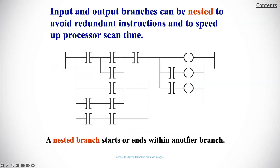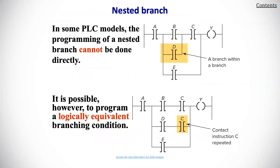Input and output branches can be nested to avoid redundant instructions and to speed up processor scan time. A nested branch starts or ends within another branch. For nested branches, in some PLC models, the programming of a nested branch cannot be done directly. It is possible, however, to program a logically equivalent branching condition.